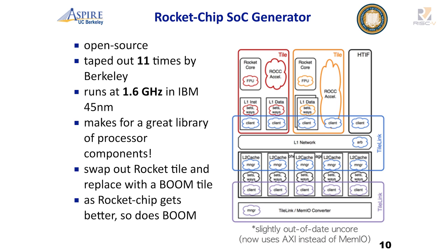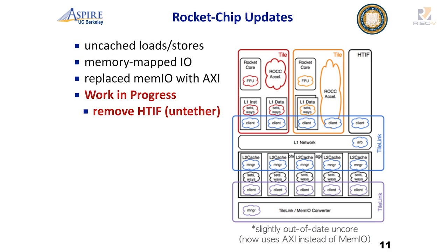The RocketChip SOC generator is open source. At Berkeley, we've taped this out about 11 times, demonstrated up to 1.6 GHz in IBM 45. From my point of view, this is a great library of processor components — page table walkers, caches, BTBs. The way BOOM works is we take a Rocket tile and swap it with the BOOM tile, so we get all the other infrastructure for free. As RocketChip gets better, so does BOOM. In terms of updates, we've added uncached loads and stores, we're supporting memory-mapped I/O, and replaced MMIO with AXI so it's easier for others to interface with.